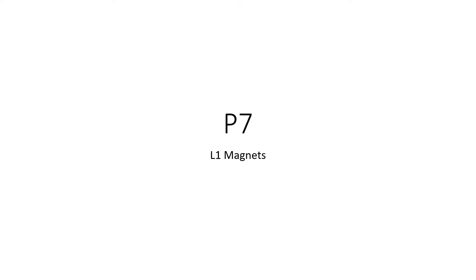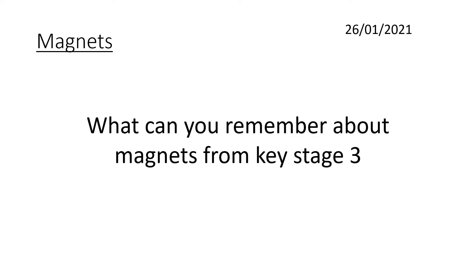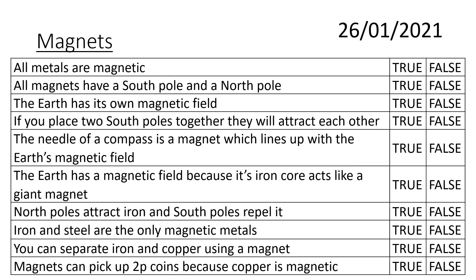This is a GCSE physics presentation on magnets. To get started, cast your mind back to Key Stage 3 when you started secondary school. What can you remember about magnets, their properties and uses? Pause the presentation, scribble down as many ideas as you can, and when you're ready, continue. At this point you should have a whole load of statements, facts, keywords, and ideas from the last time you had lessons on magnets.